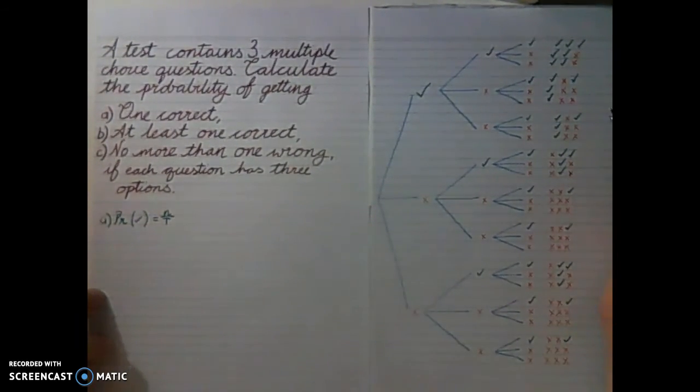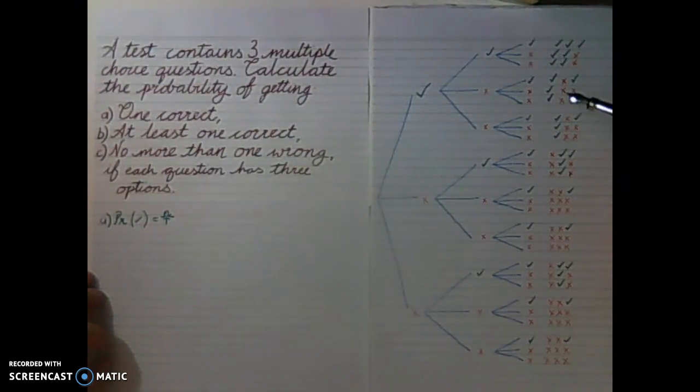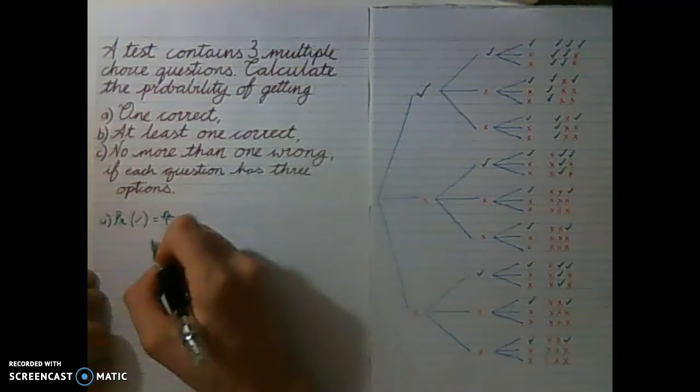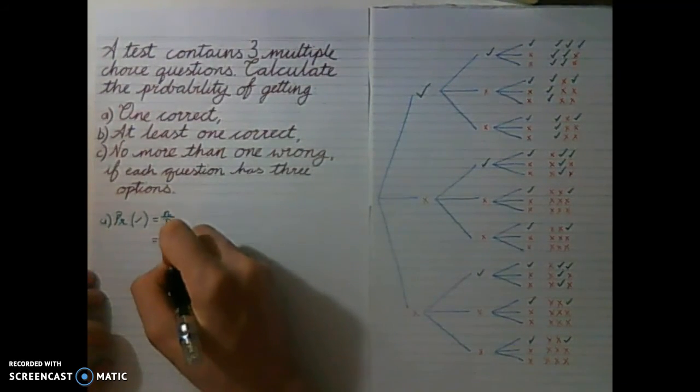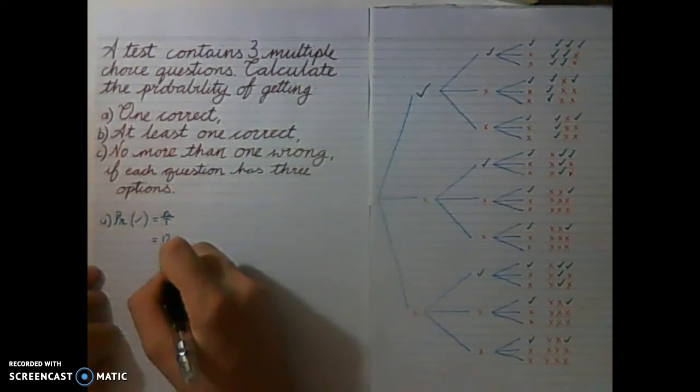So if we move over here to our different outcomes, we should just be able to count how many have just one tick. None of these are suitable. 1, 2, 3, 4, 5, 6, 7, 8, 9, 10, 11, 12. So we have 12 over, or we have three groups of 9 here, so the total number of outcomes will be 27.